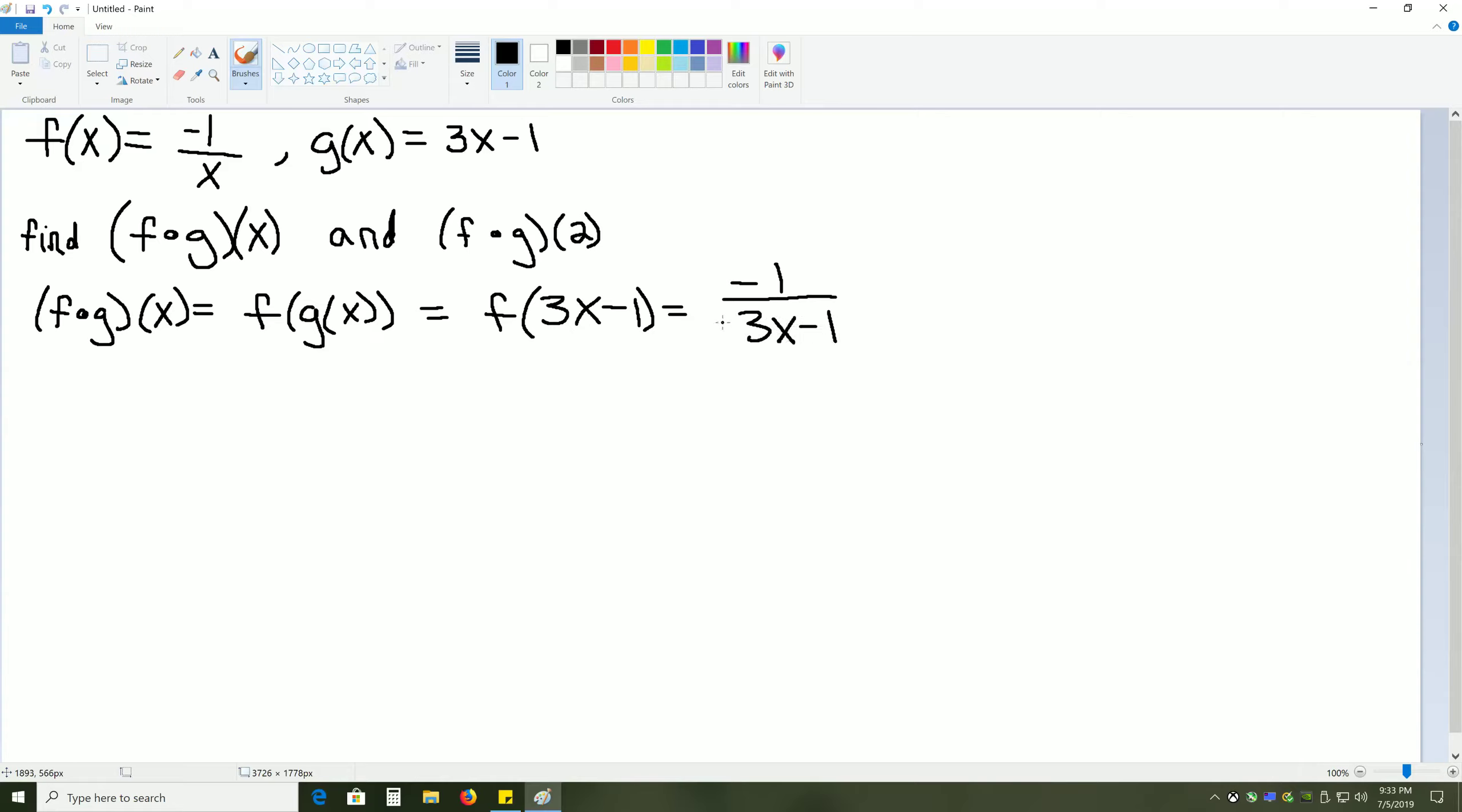And we can't simplify this, so we'll go ahead and make note of that. FOG of x is equal to negative 1 over 3x minus 1.